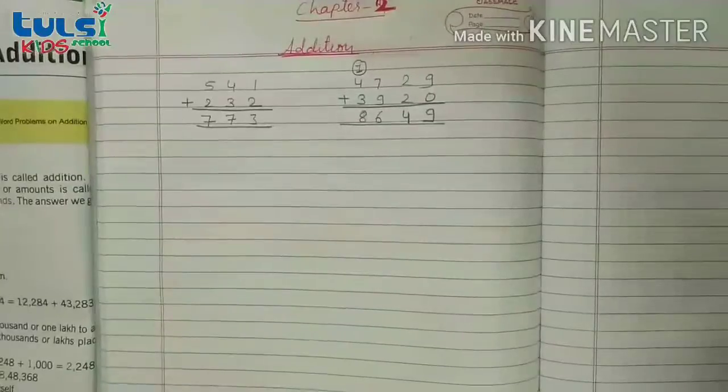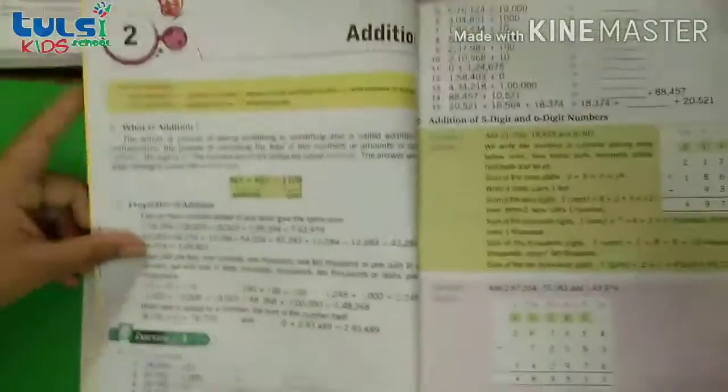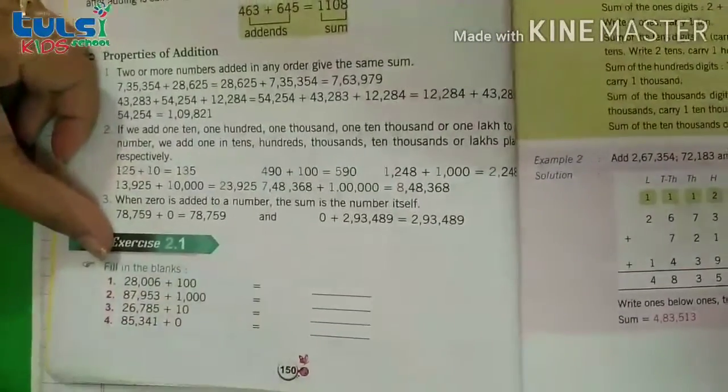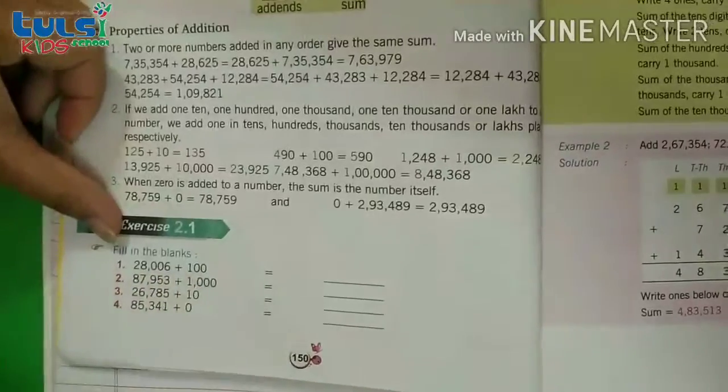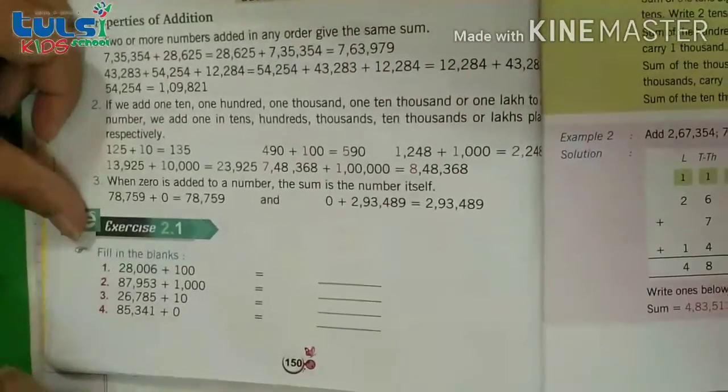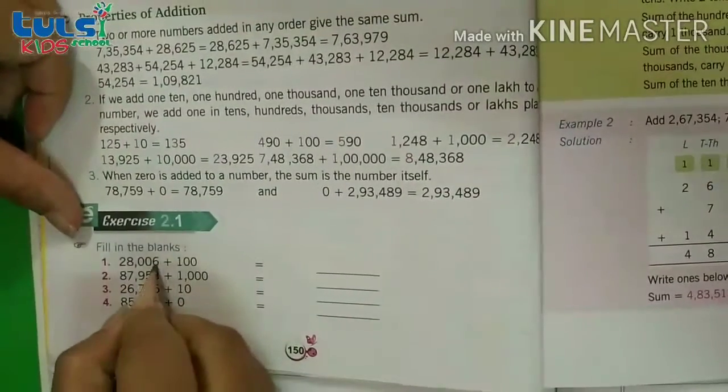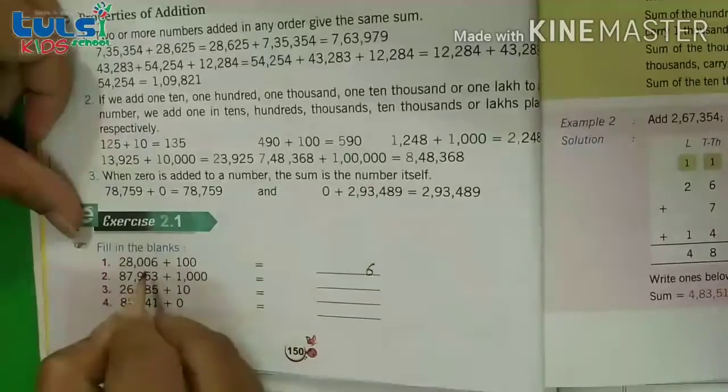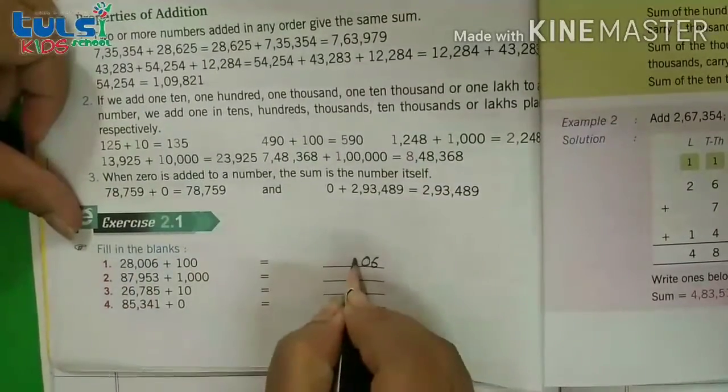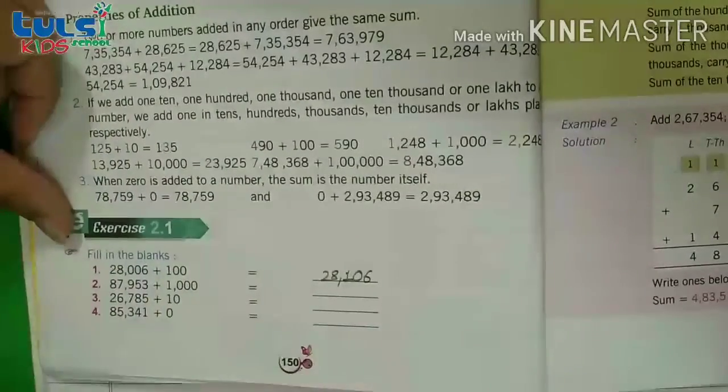Abhi hum log textbook ke through aage chalata hai. Textbook ke under yeh filler blanks dhiya hoa hai. You can see here. 28006 plus 100. Ab is tarikhe ke addition hum log directly bhi kar saktay hai. Main hai aapko ek trick se batata hoon kis tarikhe se aap log is tarikhe ke addition directly kar saktay hai. Jis me aapko calculation karne ka need nahi rahe ga. Like 6 plus 0 is 6, 0 plus 0 is 0, 0 plus 1 is 1, 8 directly and 2 we will put directly. So this is the answer.